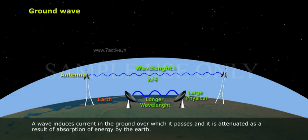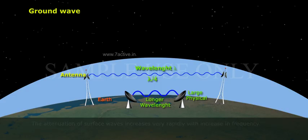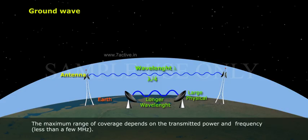A wave induces current in the ground over which it passes and it is attenuated as a result of absorption of energy by the Earth. The attenuation of surface waves increases very rapidly with increase in frequency. The maximum range of coverage depends on the transmitted power and frequency, less than a few megahertz.